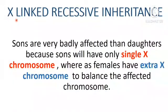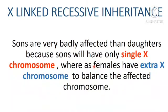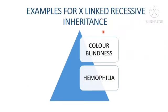Now let's talk about X-linked recessive inheritance. Sons are very badly affected compared to daughters, because sons have only a single X chromosome whereas females have an extra X chromosome to balance the affected chromosome. Females will have less severe disease and may sometimes lead a normal life. Examples of X-linked recessive inheritance include color blindness and hemophilia.